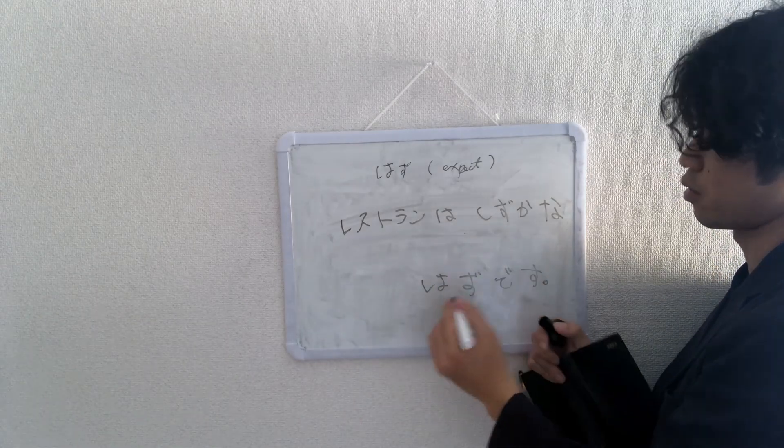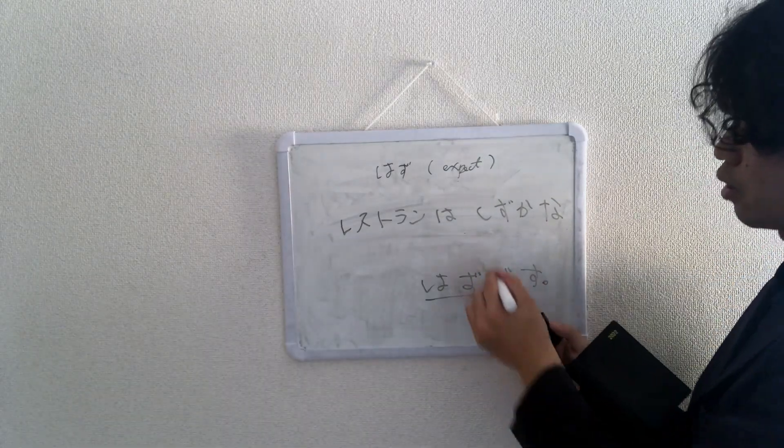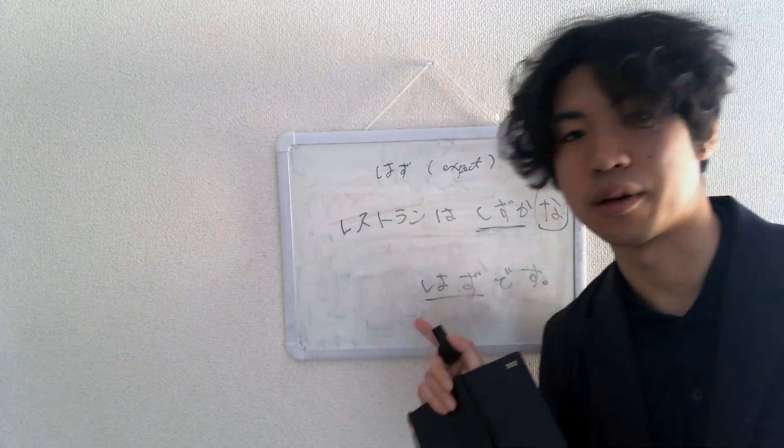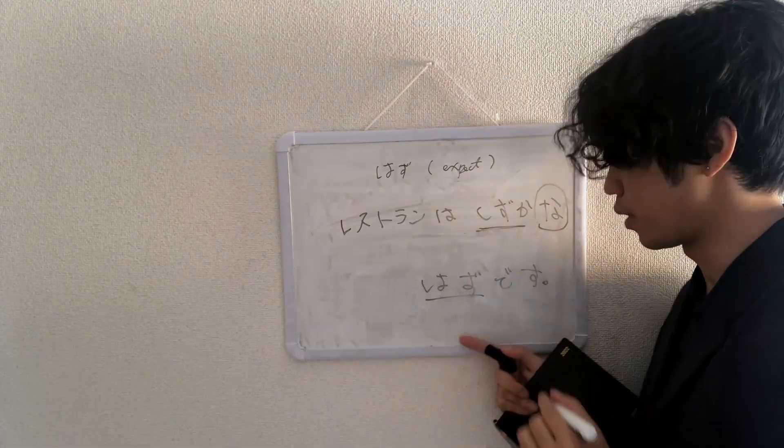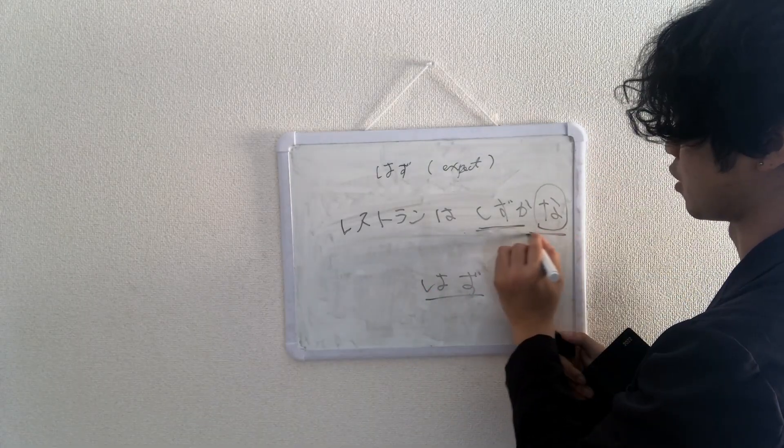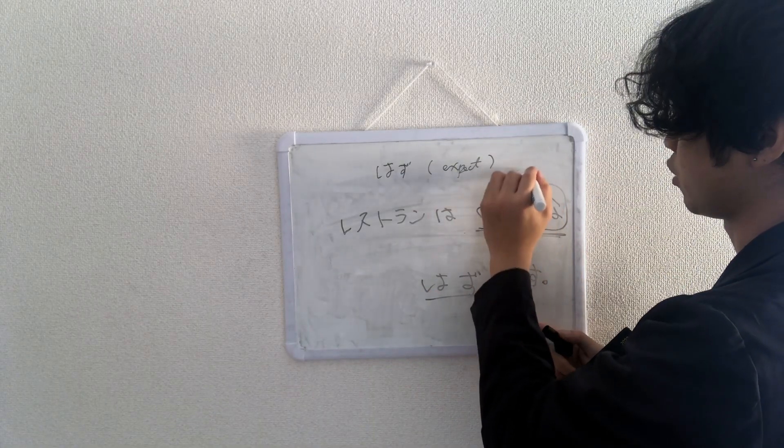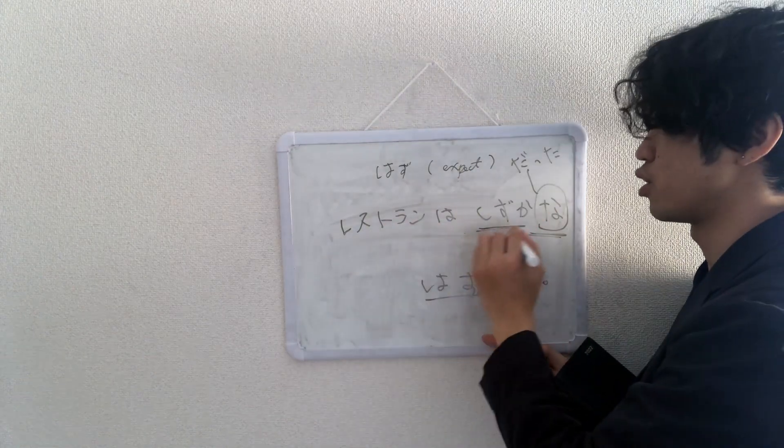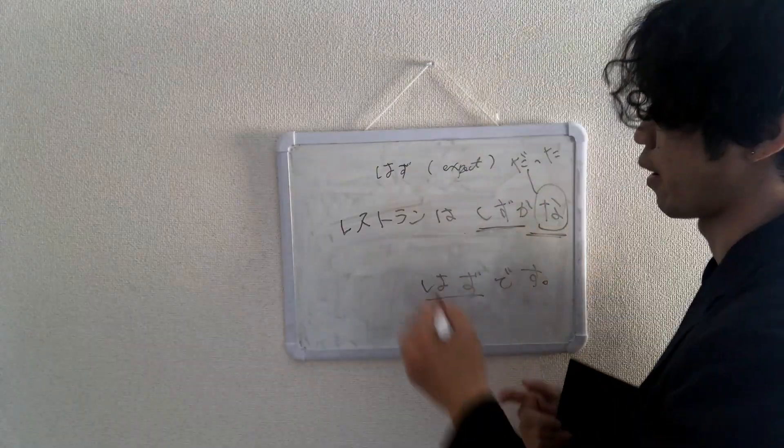Let's look at the example. レストランは静かなはずです. Restaurant is supposed to be quiet. This is present tense, it's supposed to be. But if you want to make this into past tense, you simply change this part to だった. レストランは静かだったはずです. Restaurant was supposed to be quiet.